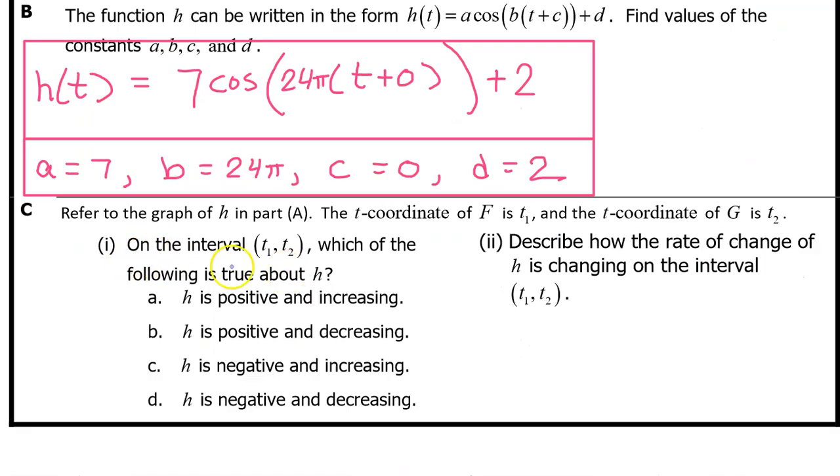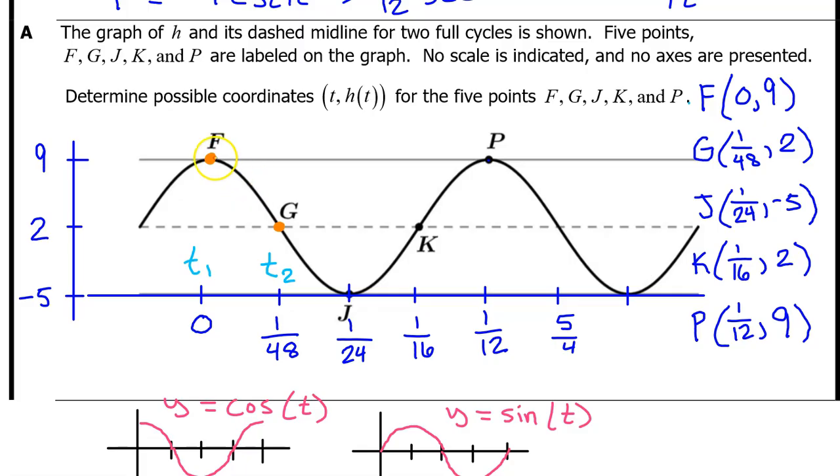See part 1. On the interval from t1 to t2, which of the following is true about h? Is h positive and increasing? Is it positive and decreasing? Is h negative and increasing? Or is it negative and decreasing? On the interval from t1 to t2, we see that the output values are all positive because all of the output values are between positive 2 and positive 9.